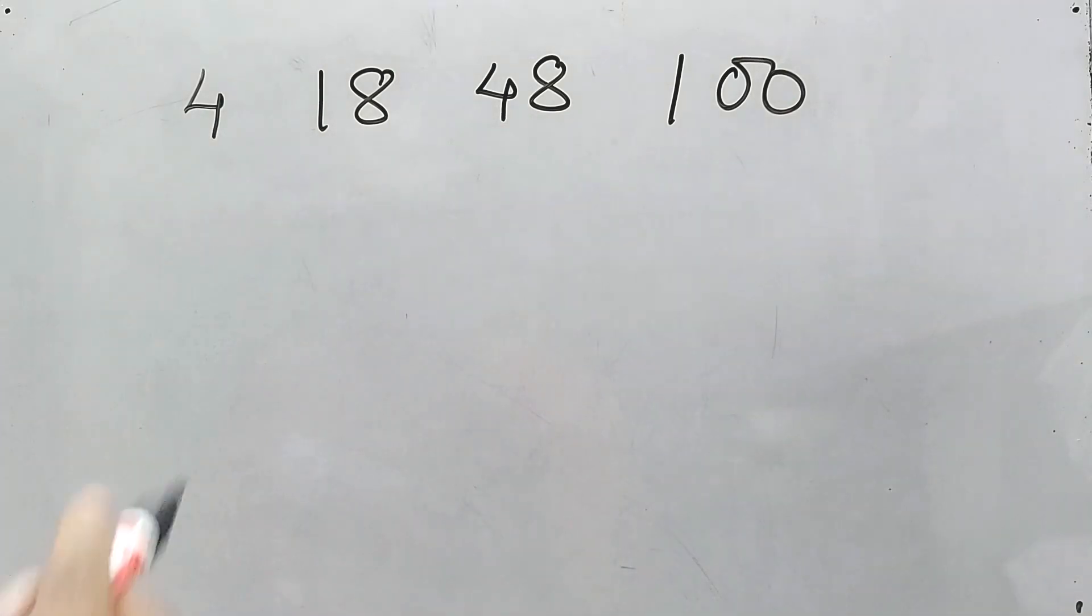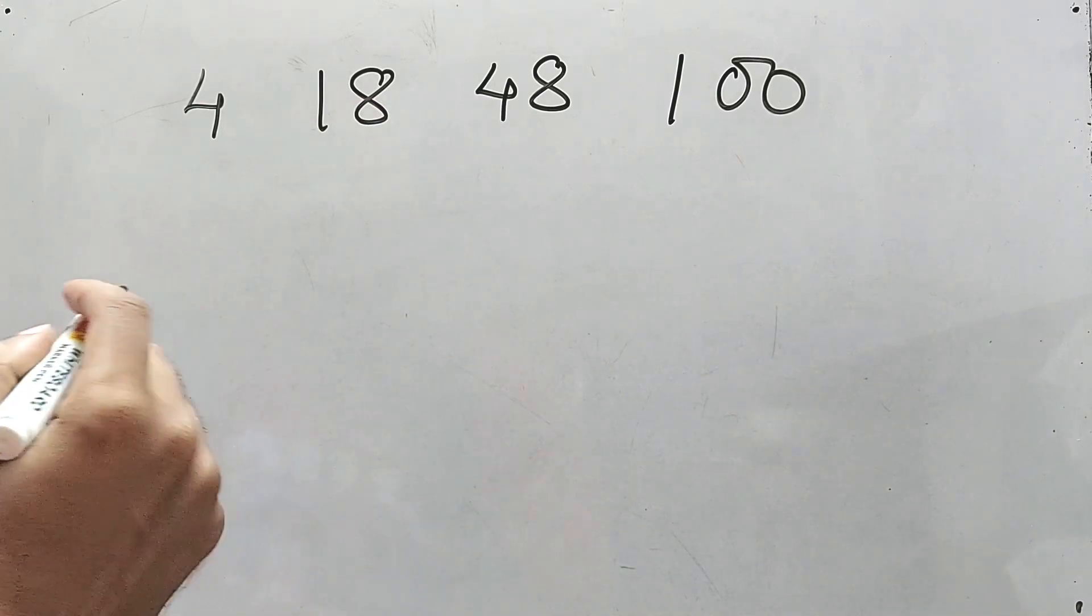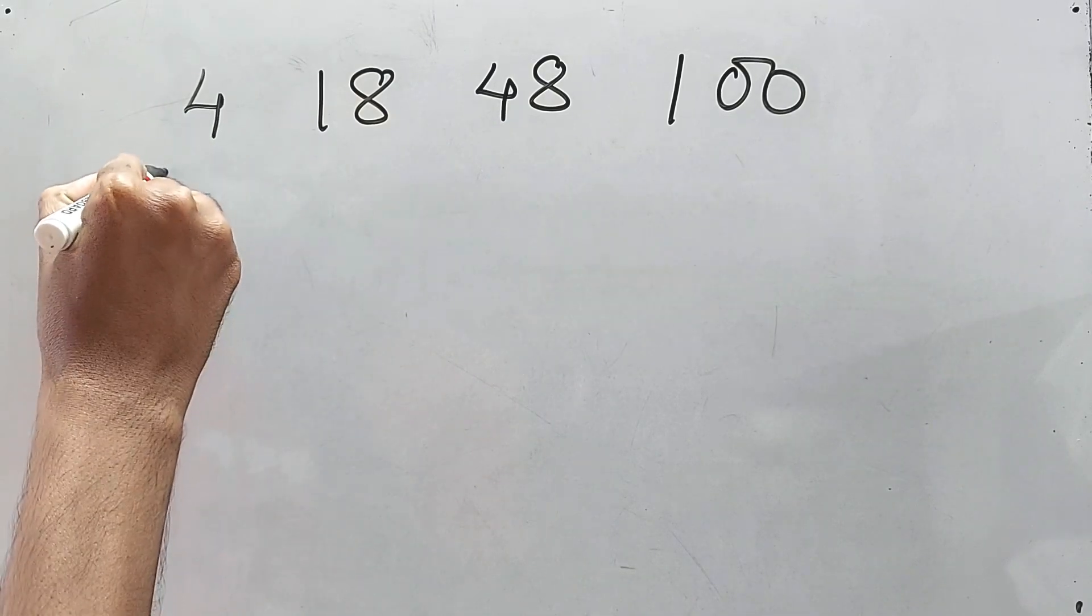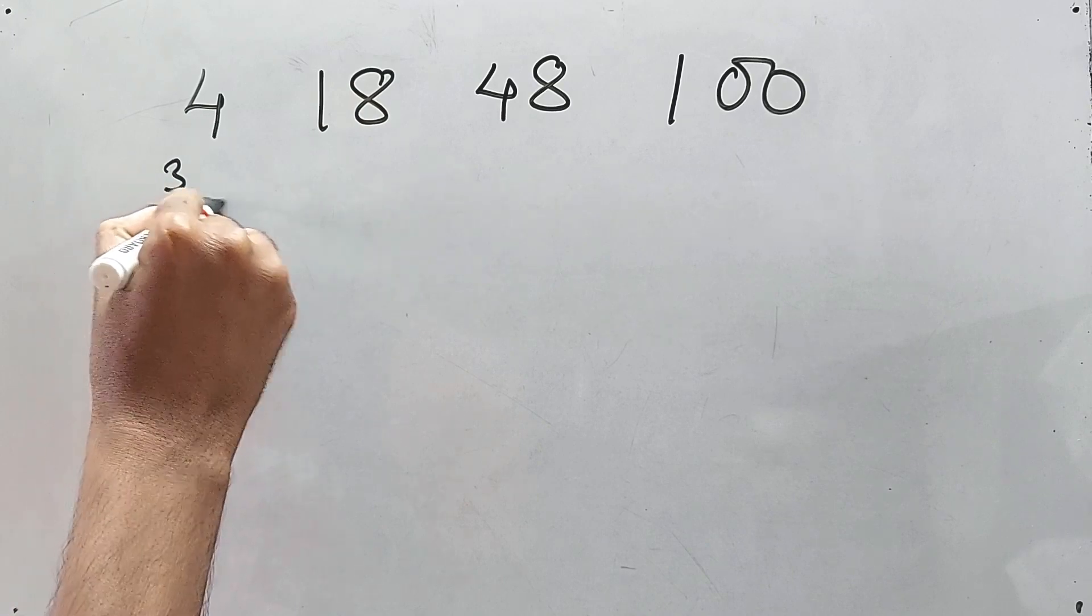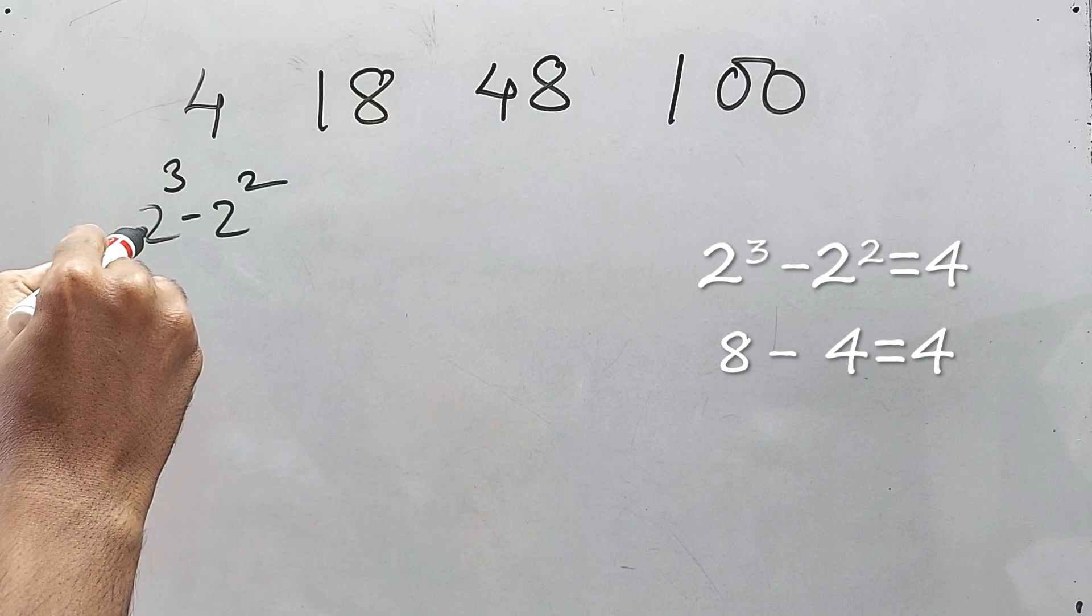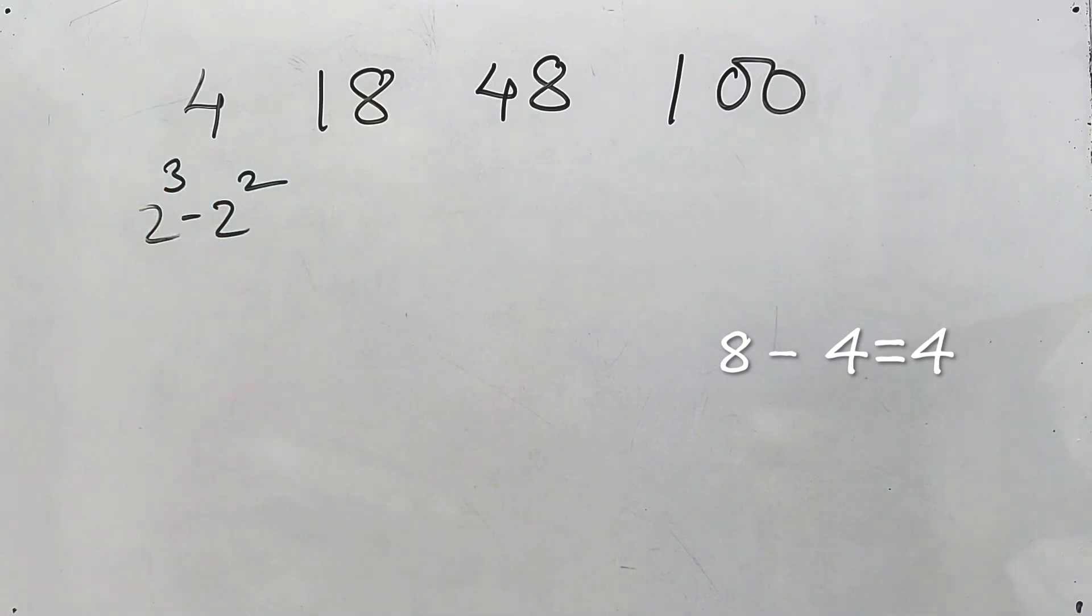And then difference of difference also you will try, but this is a different place. See the approach and definitely you will get something out of it. So here, 4 means 2 cube minus 2 square.